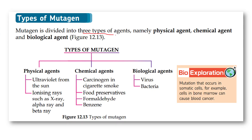There are three types of mutagen agents: physical agents, chemical agents, and biological agents. Examples of physical agents include ultraviolet rays from the sun, ionizing rays, x-rays, alpha rays, and beta rays. Chemical agents include carcinogens found in cigarette smoke, food preservatives, formaldehyde, and benzene. Biological agents include viruses and bacteria.